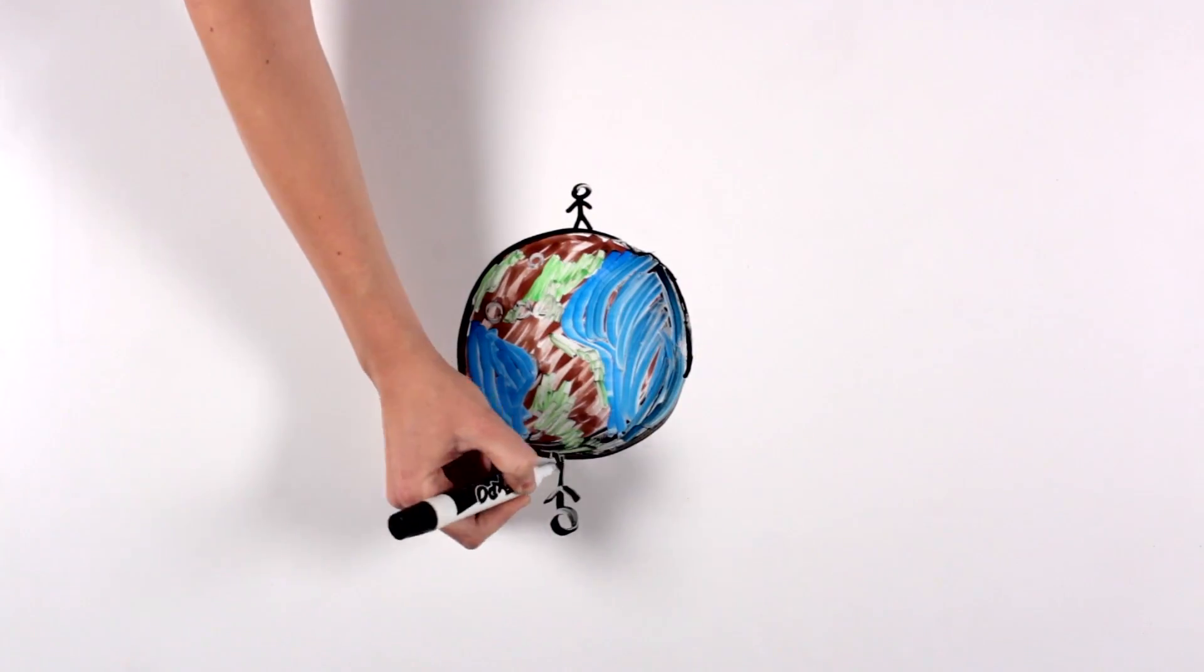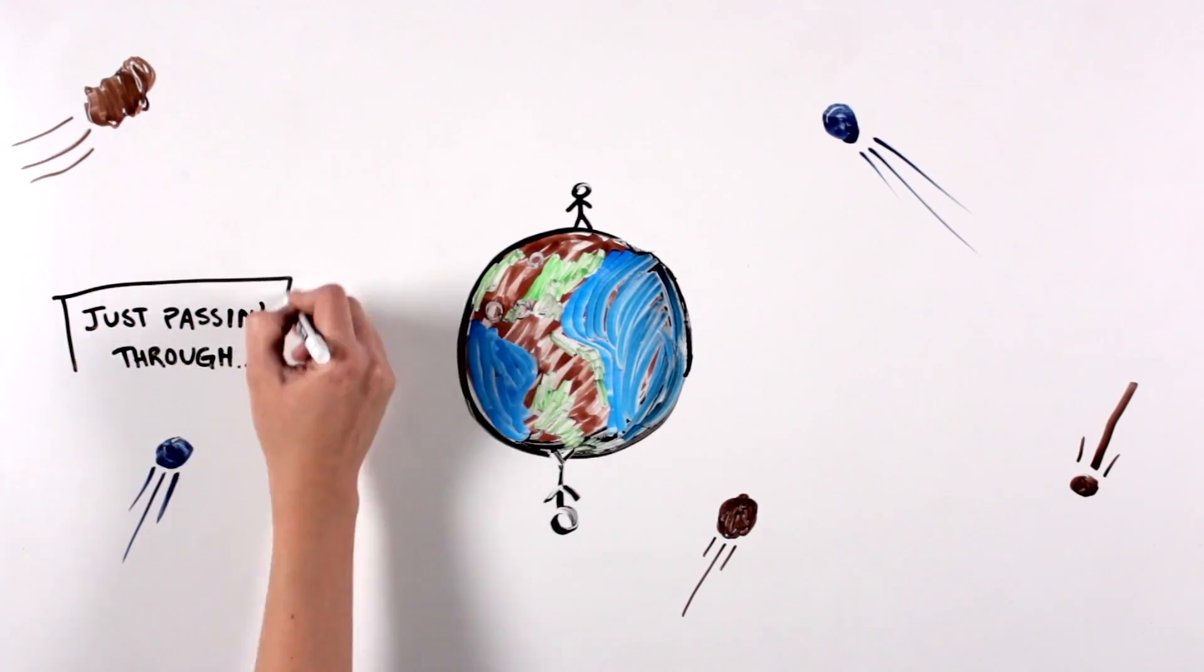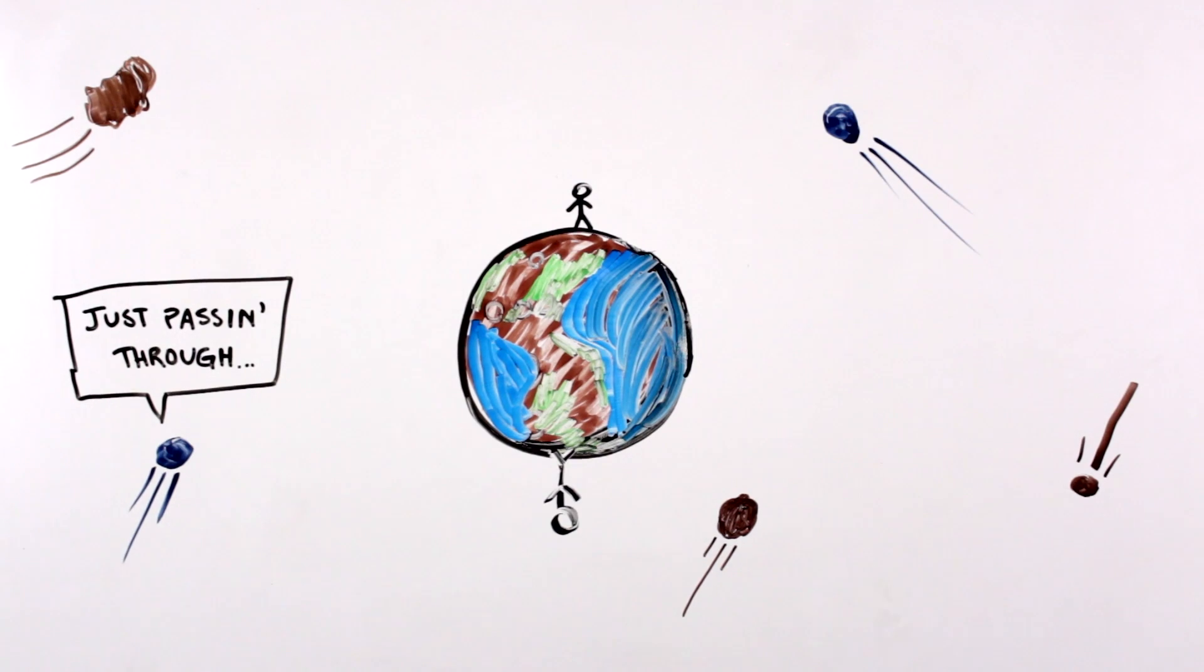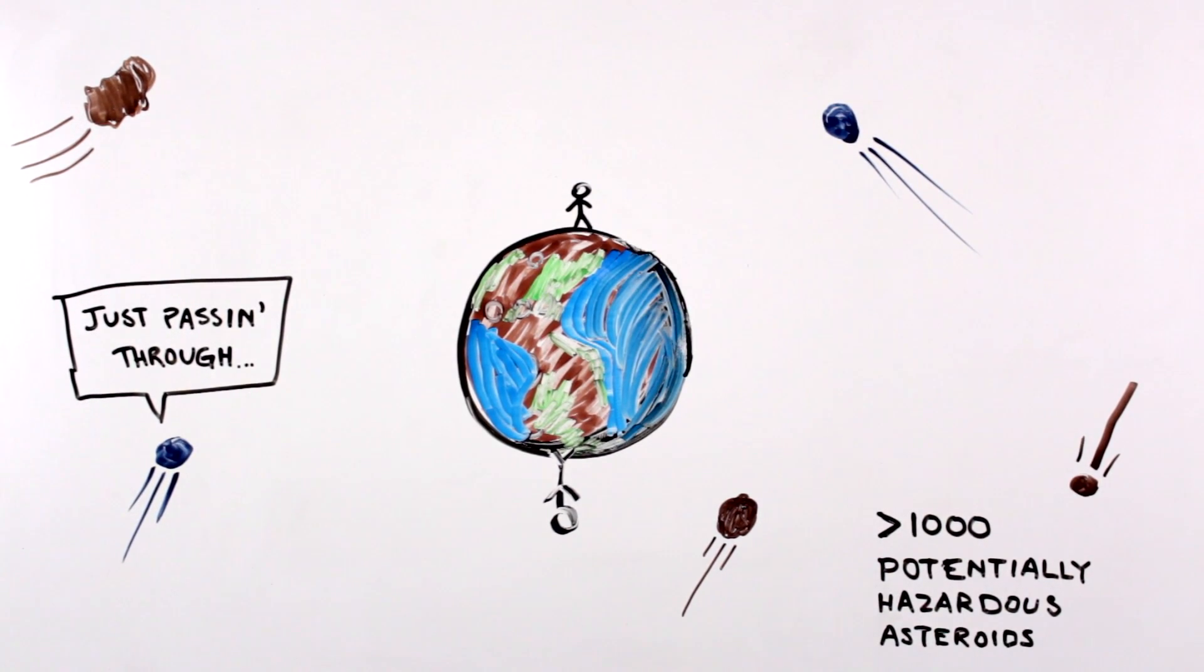Even today, small asteroids fly by the Earth quite frequently. Astronomers have discovered over 1,000 potentially hazardous asteroids that might threaten Earth again someday.